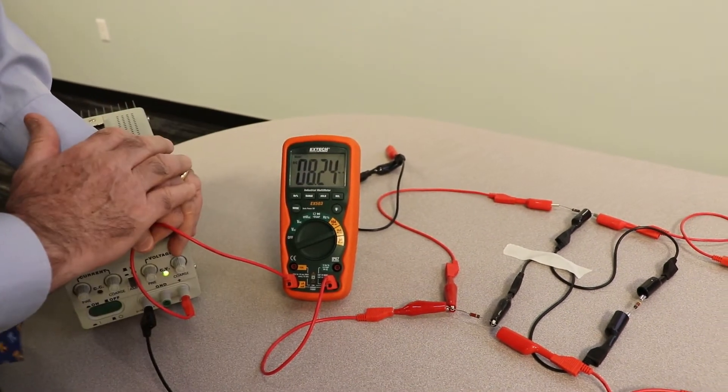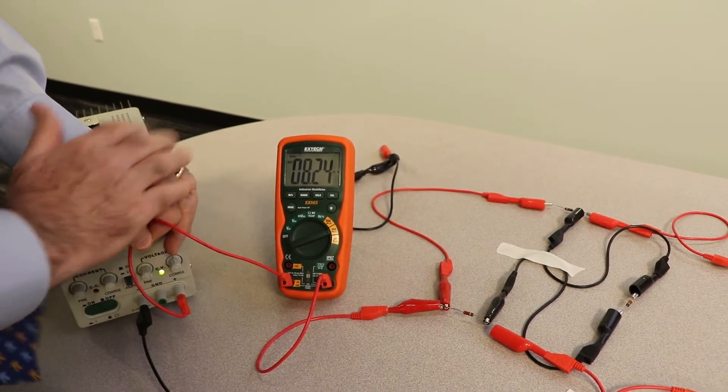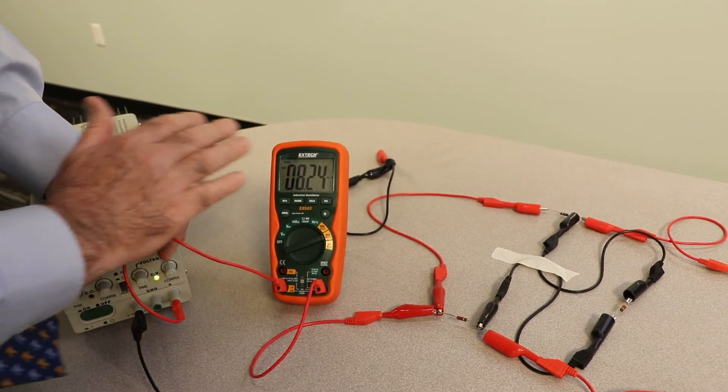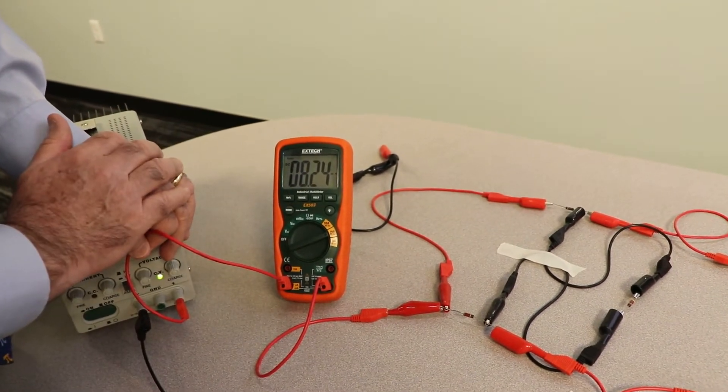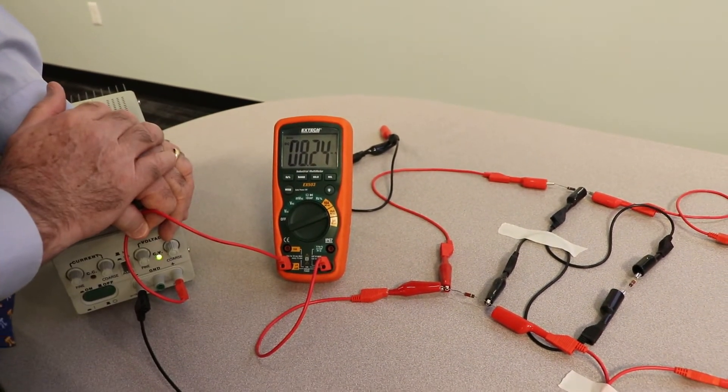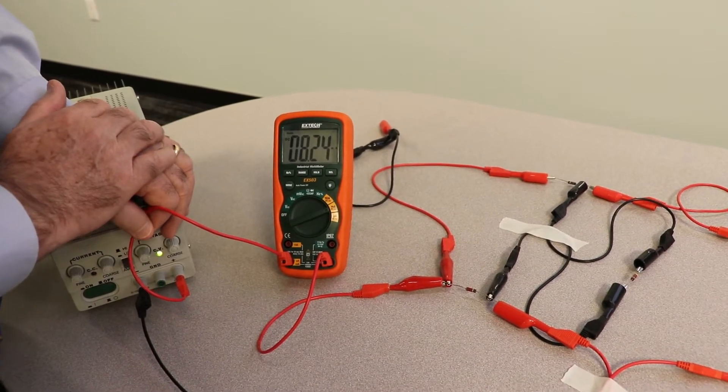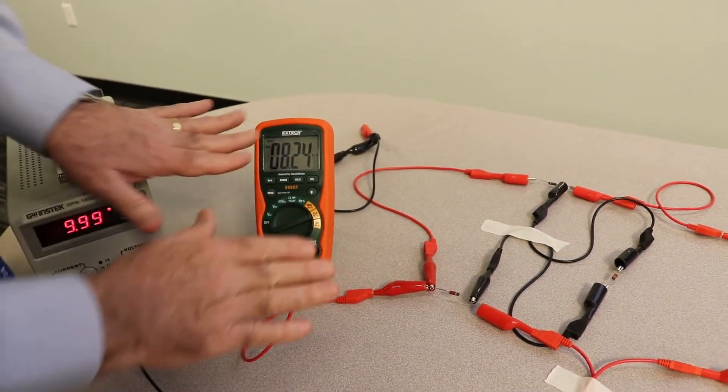So when you hook this thing up incorrectly, so you want an ammeter but you hook it up like a voltmeter, you will blow the fuse inside the meter. And then I have to open it up and change the fuse, which is a pain. So I'm going to leave this guy alone, the 8.24.